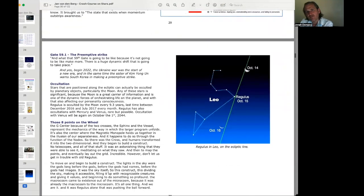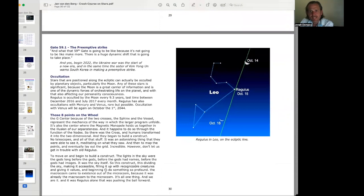And then Gate 59, Line 1, the preemptive strike. And what that 59th Gate is going to be like, because it's not going to be like make more. There's a huge dynamic shift that's going to take place. And yes, begin 2022, the Ukraine war, the start of a new era. And in the same time, the sister of Kim Jong-un warned South Korea in making a preemptive strike.